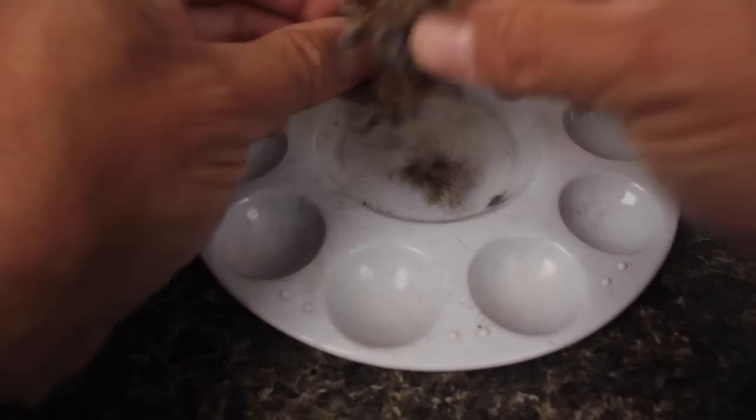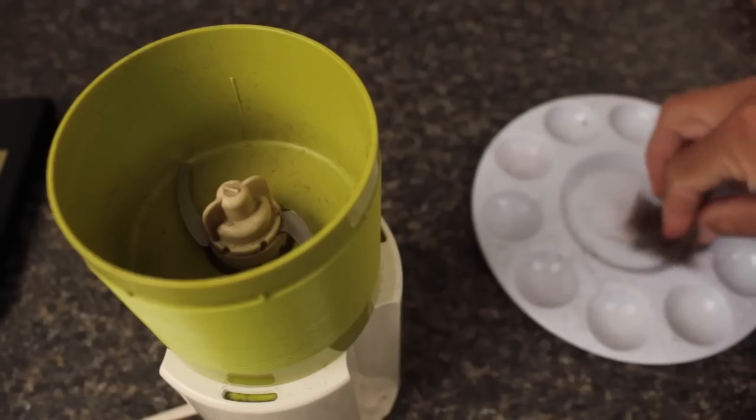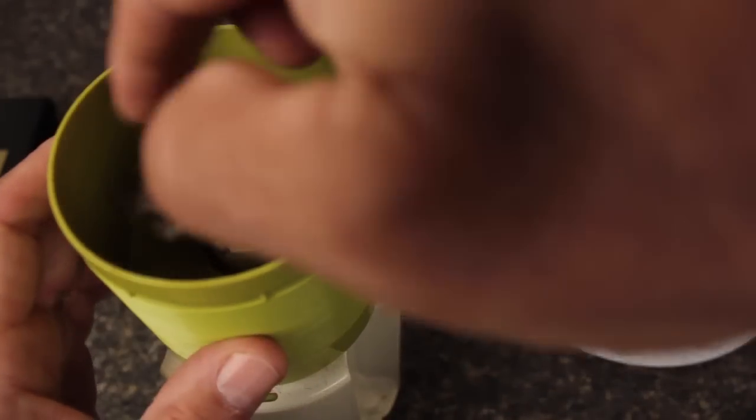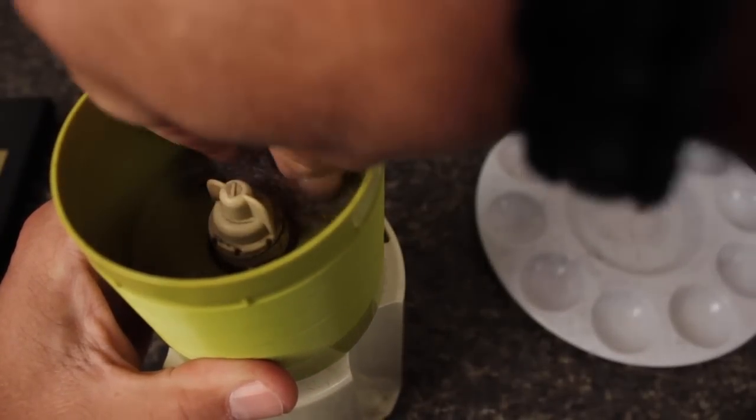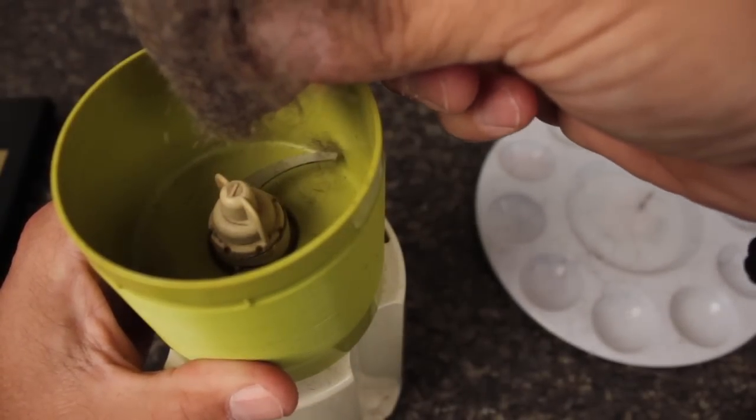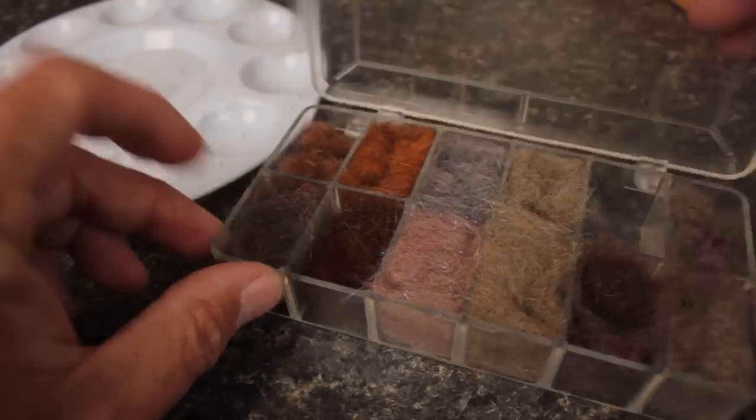A bit of premixing before the final blending is always a good idea. Once you have the dubbing roughly mixed, toss it into a little coffee grinder and give it a spin. In fairly short order, you'll have a dubbing blend that really goes well with the rest of the fly.